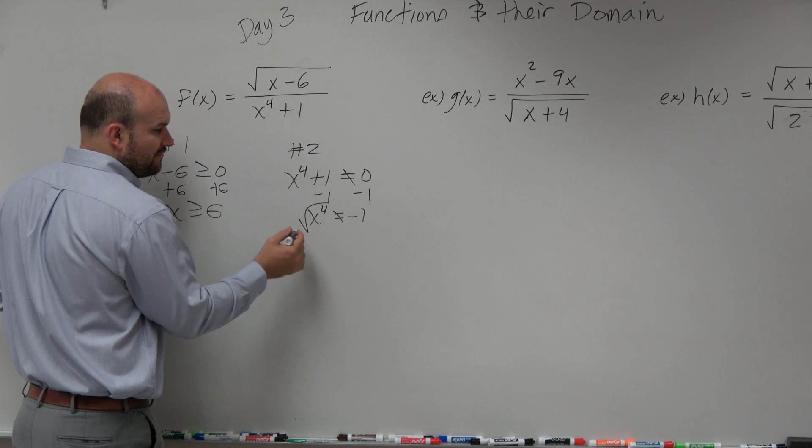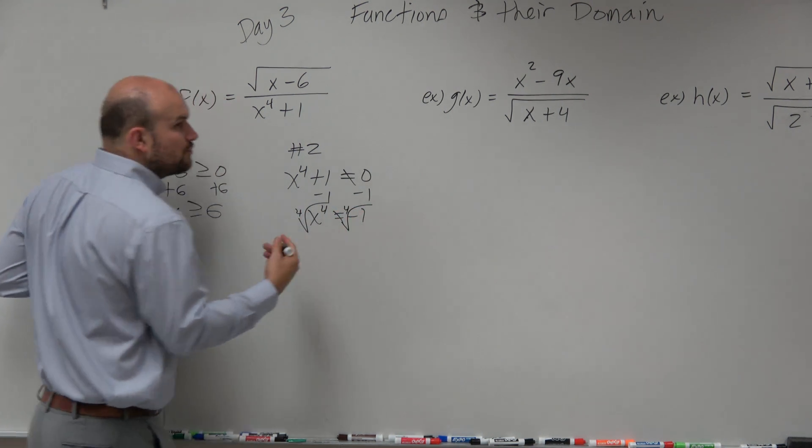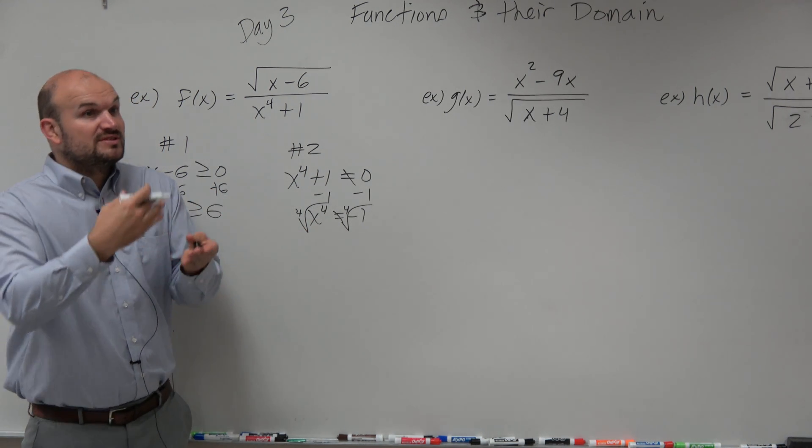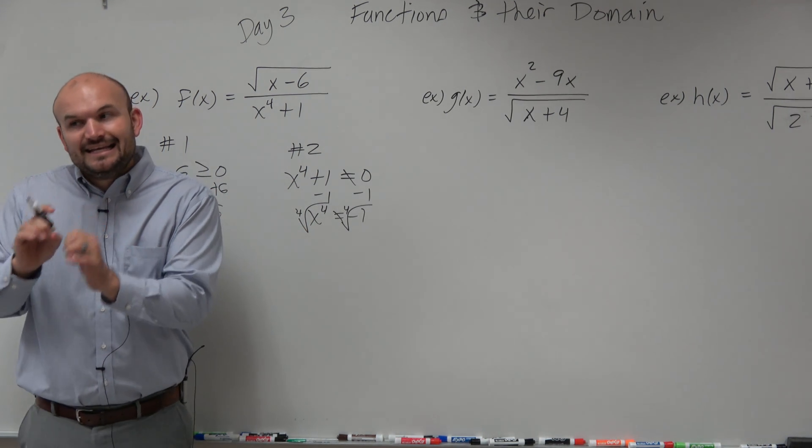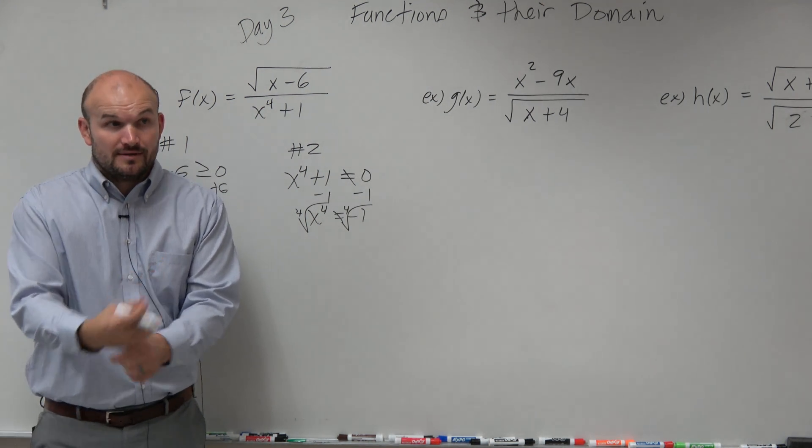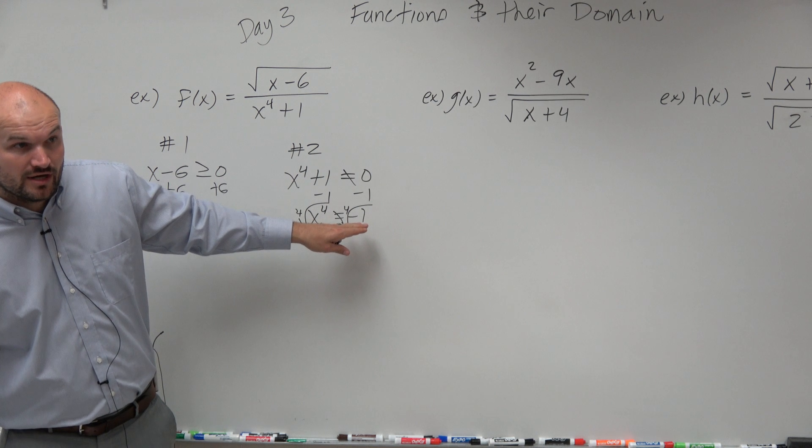Now to undo the fourth power, you take the fourth root. You guys took the square root, which again it doesn't matter, because square root, fourth root, sixth root, tenth root, any even root, you cannot take the even root of a negative number. So there is no real number that you can take the even root of.